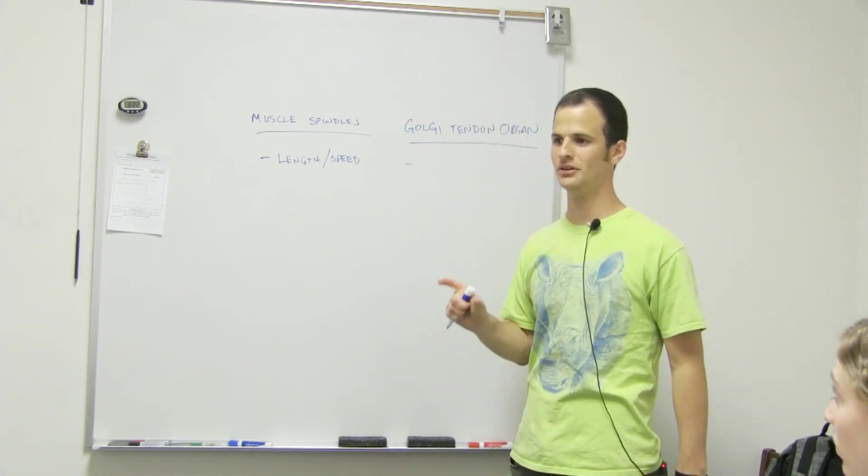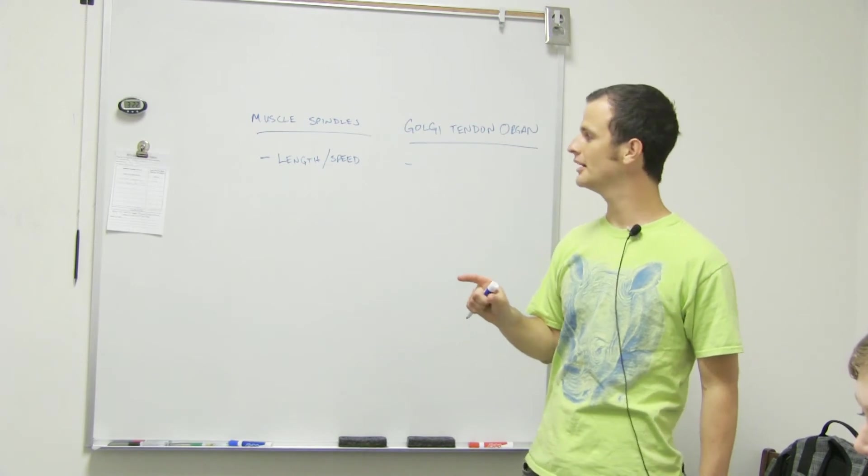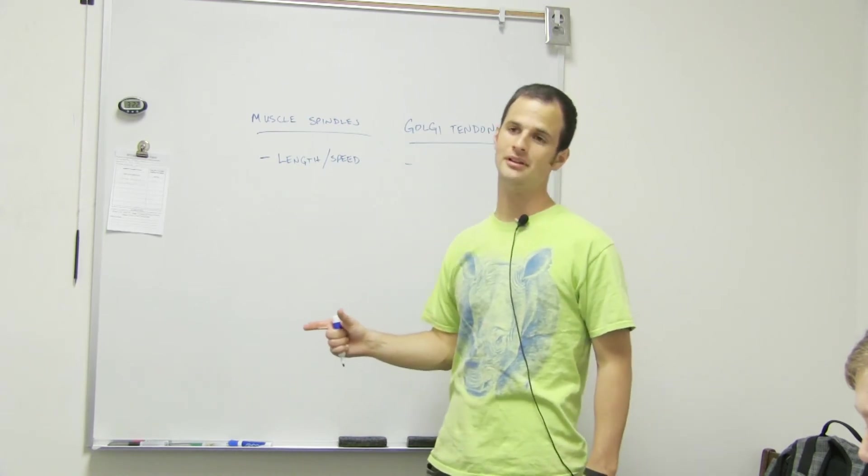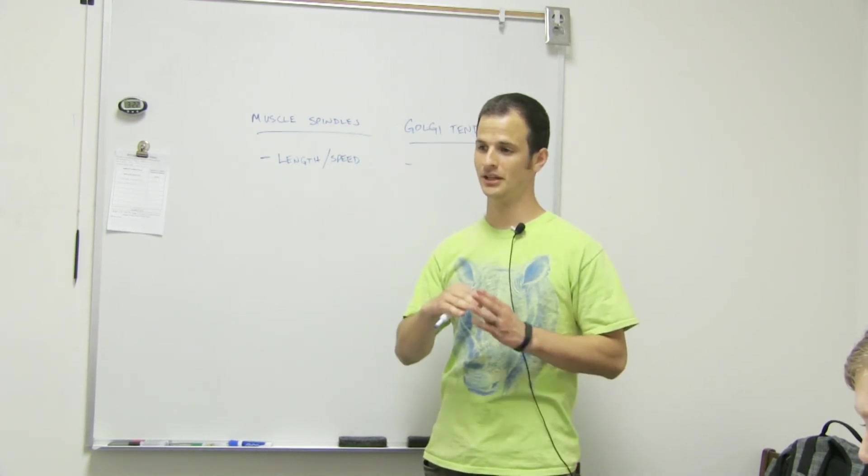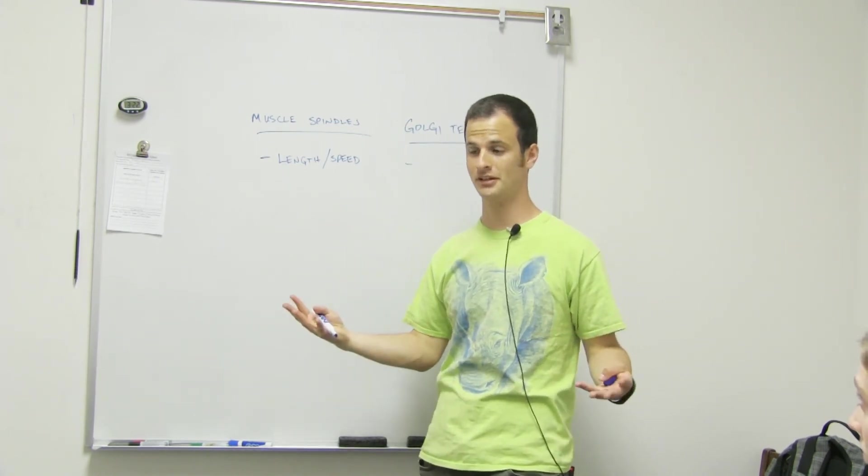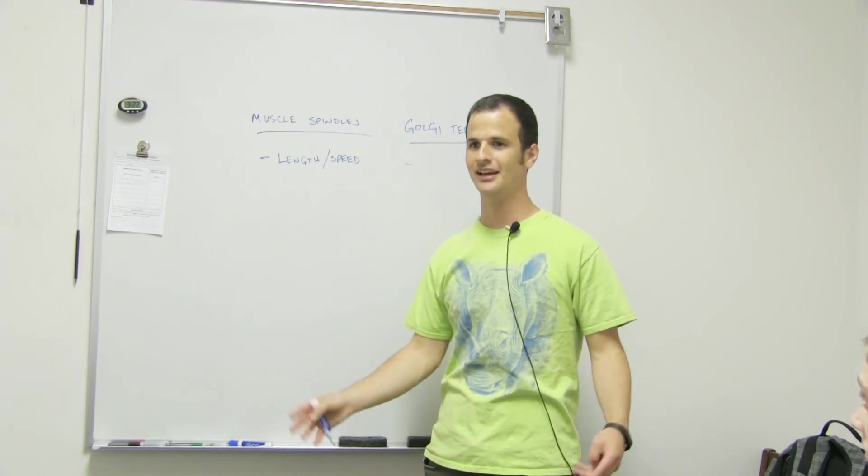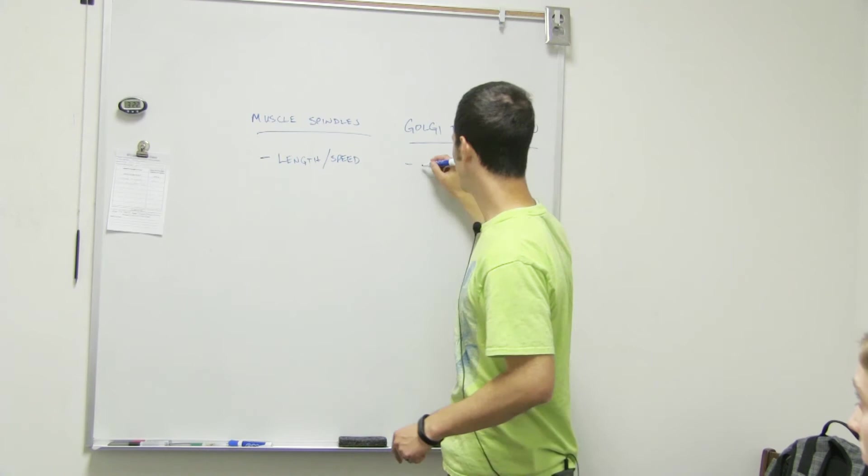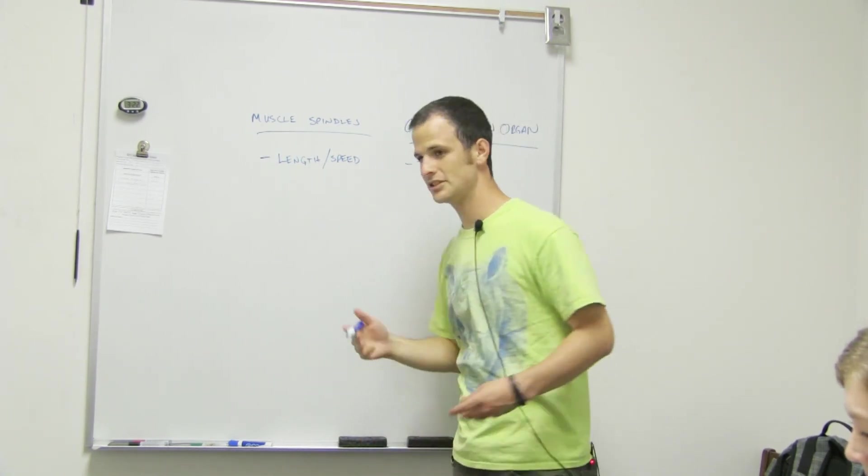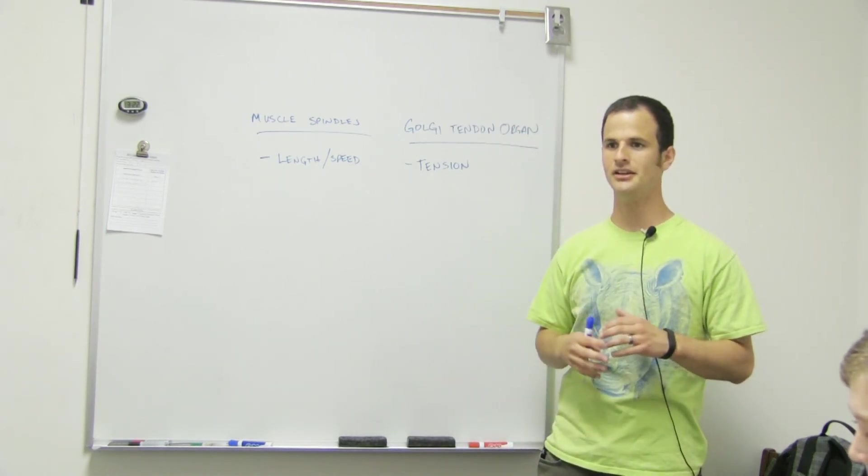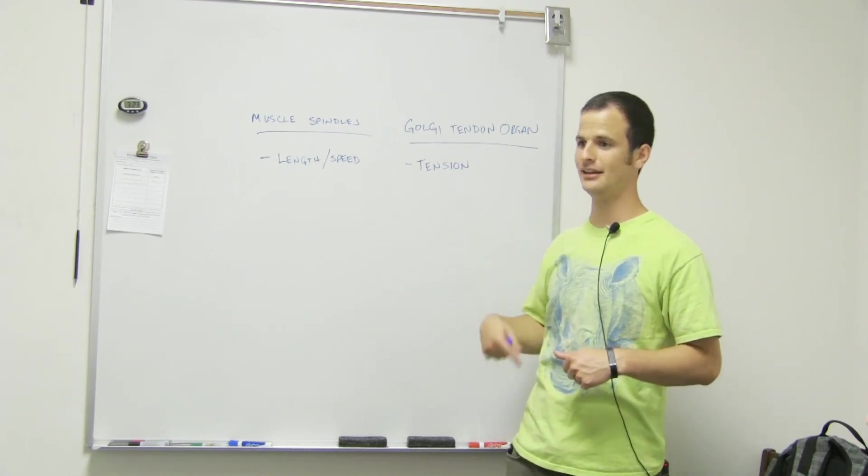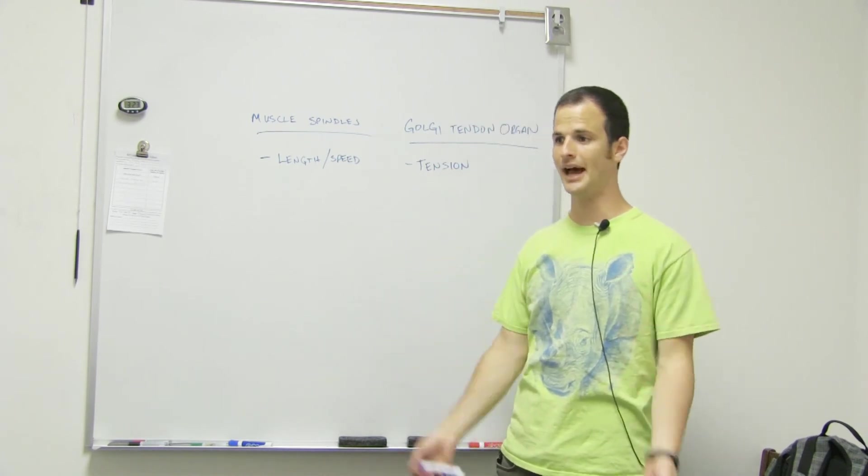So the idea behind the Golgi tendon organ is to prevent injury because basically your muscles are capable of producing enough force to rip off of the bone. They're capable of generating that force, but that would be not ideal. And so what the Golgi tendon organ is, it measures tension. This is a key word. It measures tension. Because if the tension on that muscle gets too high, like it's about to rip off, it'll cause an inhibitory effect on that muscle and cause it to relax.